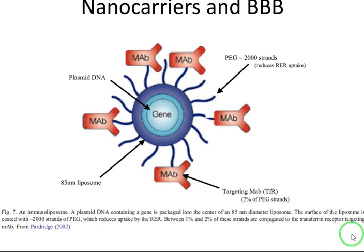In the previous videos we mentioned three ways to pass the blood-brain barrier: the first was inhibiting the function of the P-glycoproteins, the second was using cell-penetrating peptides, and the third was T cells which make a hole in the endothelial cells and pass the blood-brain barrier.